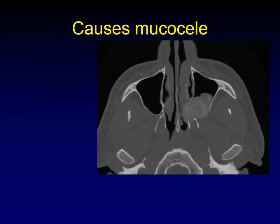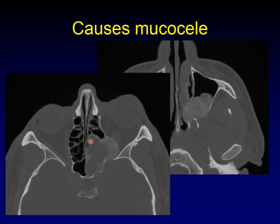Another thing fibrous dysplasia can do is obstruct outflow, similar to the foramina problem. Here is an area of fibrous dysplasia with a characteristic ground glass appearance, and here are the ethmoid air cells and sphenoid sinus that were obstructed by the expansile bone, forming a mucous seal.